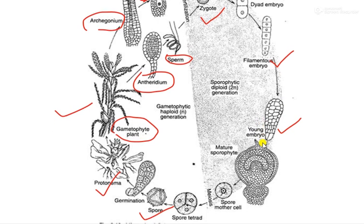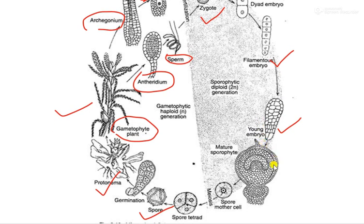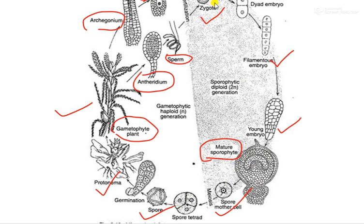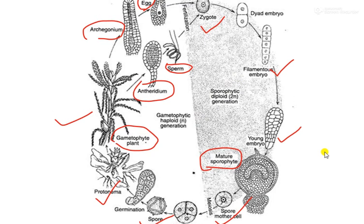The zygote divides and forms an embryo — first filamentous, then a young embryo. The young embryo further divides to form the mature sporophyte, which contains three parts: the foot, an inconspicuous seta, and a large capsule. The capsule has a spore sac inside, which encloses spore mother cells. These spore mother cells undergo meiosis to form spores. Thus the zygote is the beginning of the sporophytic generation.